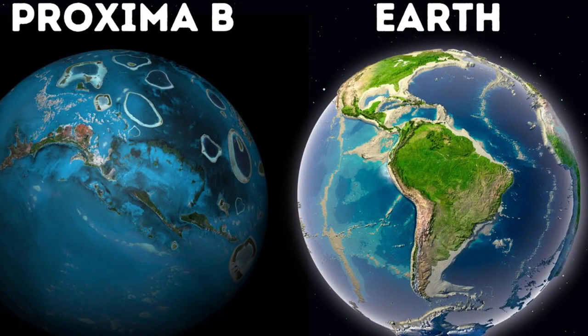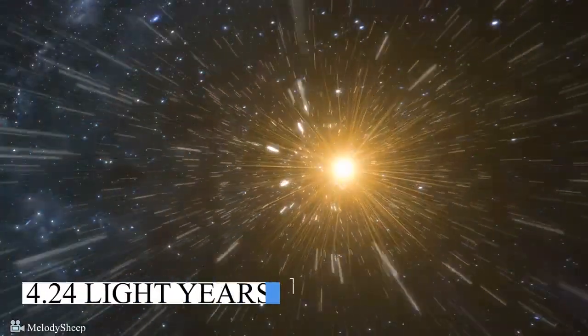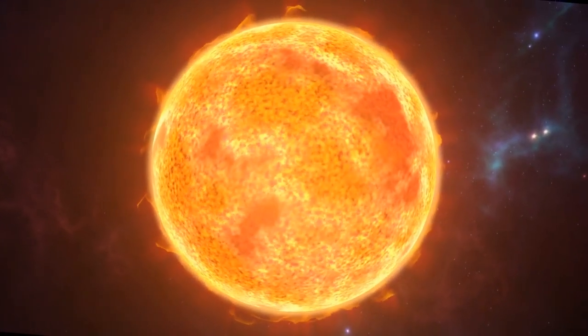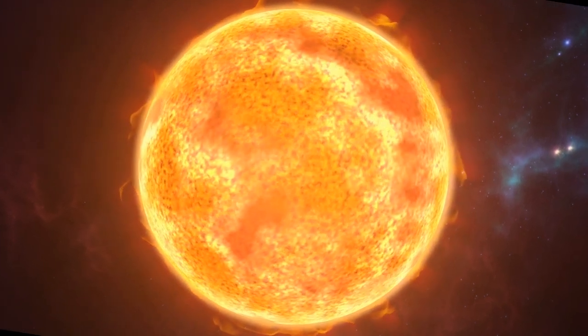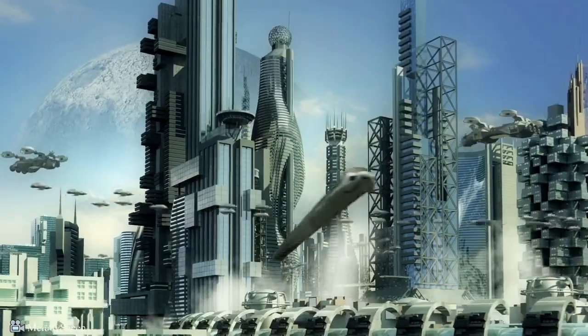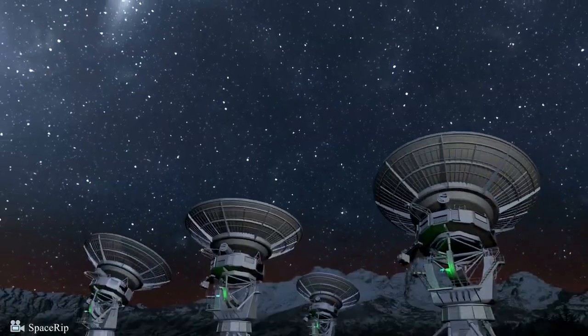One of the exoplanets nearest to Earth is Proxima b, which is 4.24 light-years away. Proxima Centauri, the star closest to our solar system, circles Proxima b around the Sun. These exoplanets and Proxima b may now be hiding extraterrestrial life because it is too difficult to find them.